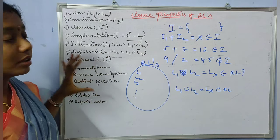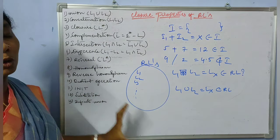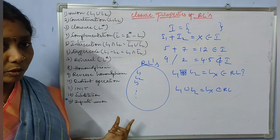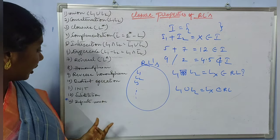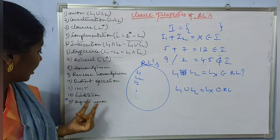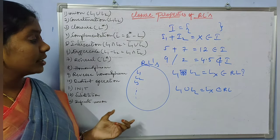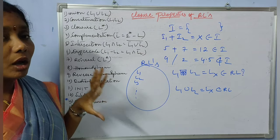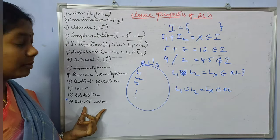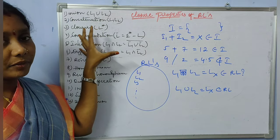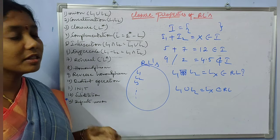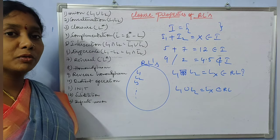Regular languages are closed under almost all operations — closed under concatenation, closed under closure, closed under complementation — except the last one, infinite union. So regular languages are closed under all these operations except infinite union. In the next class we are going to look into the details of how regular languages are closed under union and why they are closed under each particular operation. Keep watching my lectures, and thank you for watching the video.